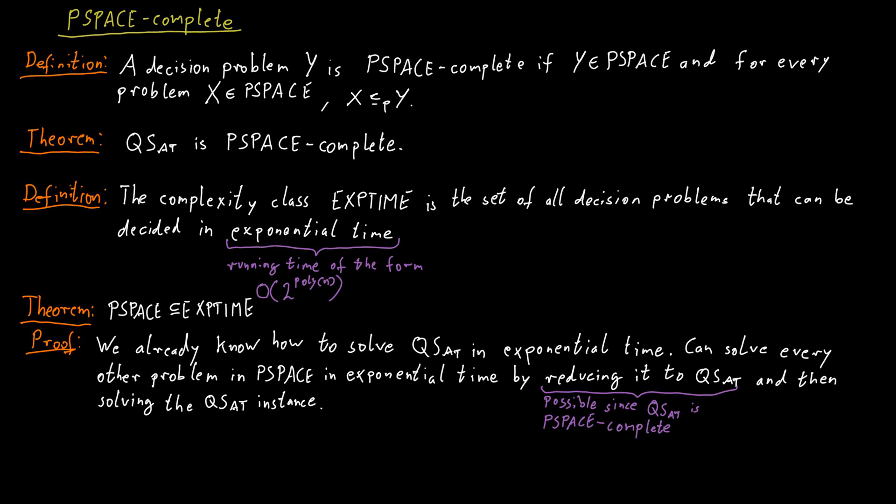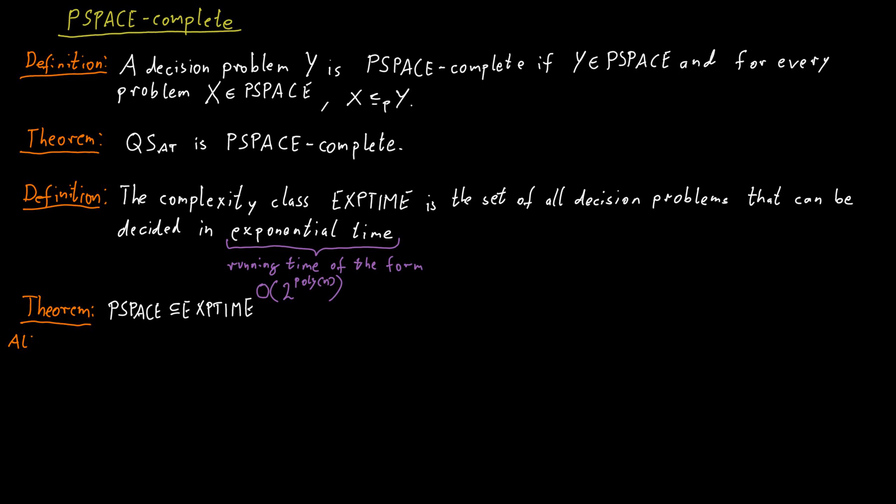A different way of seeing that P-space is contained in EXP-time is maybe even nicer. It doesn't use any advanced theorems like Q-sat is P-space complete. Instead, we just think about the Turing machine that only uses polynomial space, and we consider the configurations of that Turing machine. The configuration of this Turing machine describes that machine and its current situation completely. So, it describes where exactly the head of the Turing machine is on the tape, it describes the entire contents of the tape, and it describes the internal state of the machine as well.